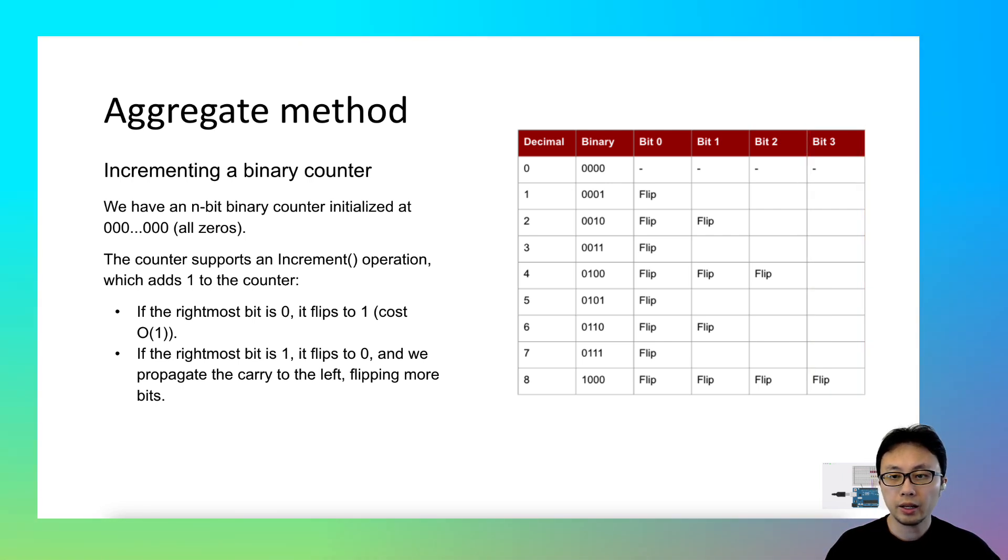The pattern here is that when you go from the right bit to the left bit, each bit flips half of the time in comparison to its right neighbor, until it gradually becomes 1.